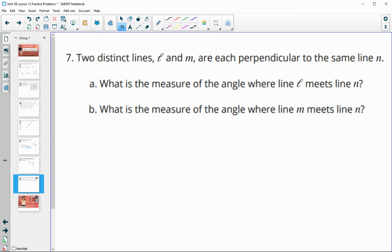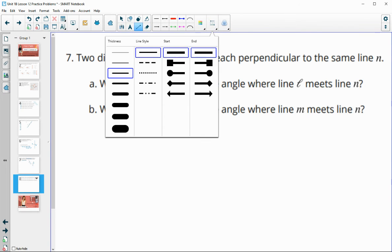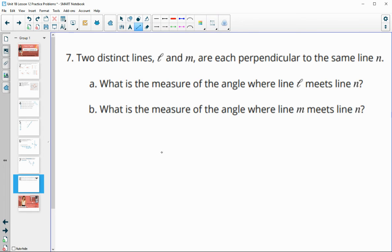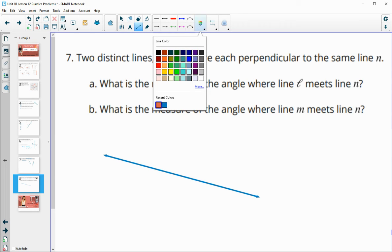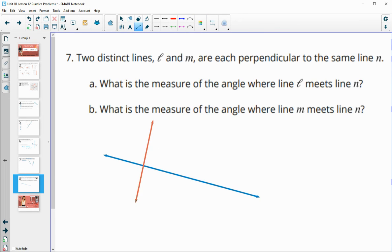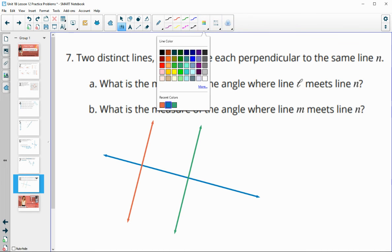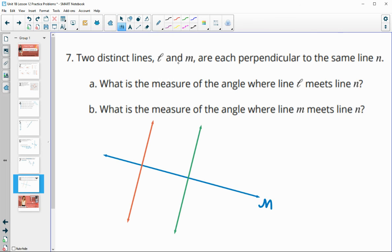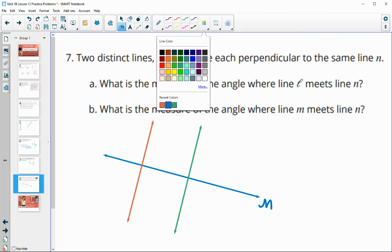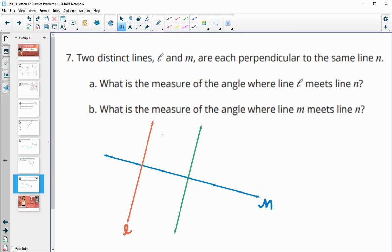Number seven, two distinct lines, L and M, are each perpendicular to the same line N. So let's get this drawn. So let me draw our line N. And then let's draw two other lines that are perpendicular to it. So perpendicular meaning that there's a 90 degree angle here. So perpendicular to that same line N. All right. So this is N and then this is L and M.